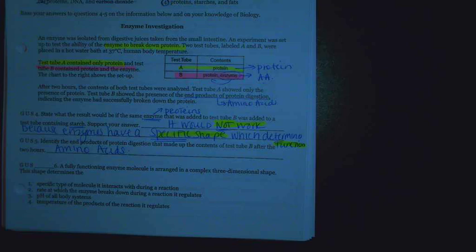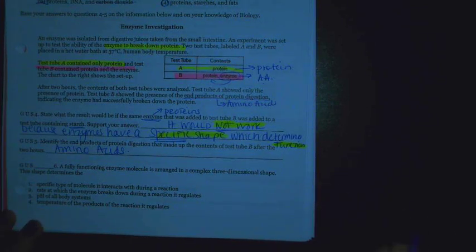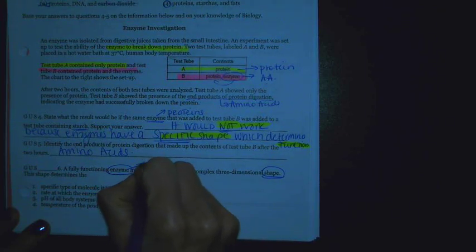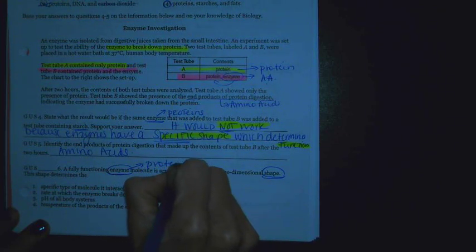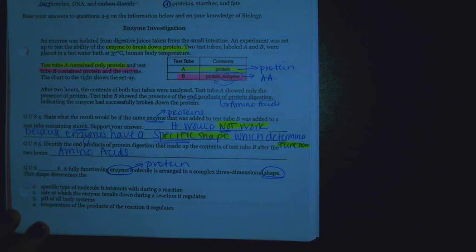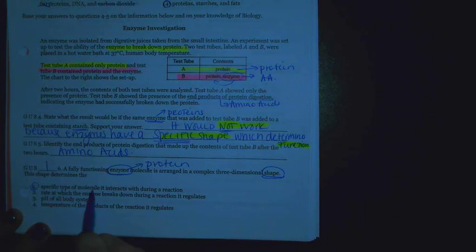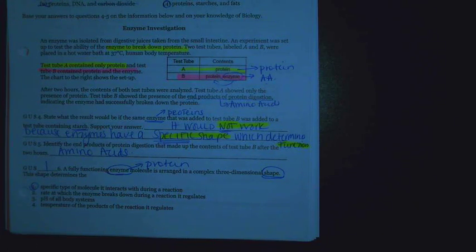And then that last question. A fully functioning enzyme molecule is arranged in a complex 3D shape. Remember again, enzyme is an example of protein. The shape determines. This answer choice is going to be one specific type of molecule it interacts with during the reaction.